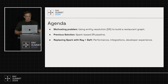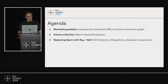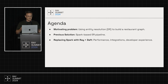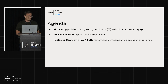This is a very common problem people work with: entity resolution. We're building a restaurant graph. Our company is at the intersection of food, tech, and real estate. The previous solution we built is a Spark-based entity resolution pipeline, and we're essentially replacing Spark with Ray plus Daft. So the questions are: do we get similar performance? Does it integrate with our tech stack? How was it to work with?